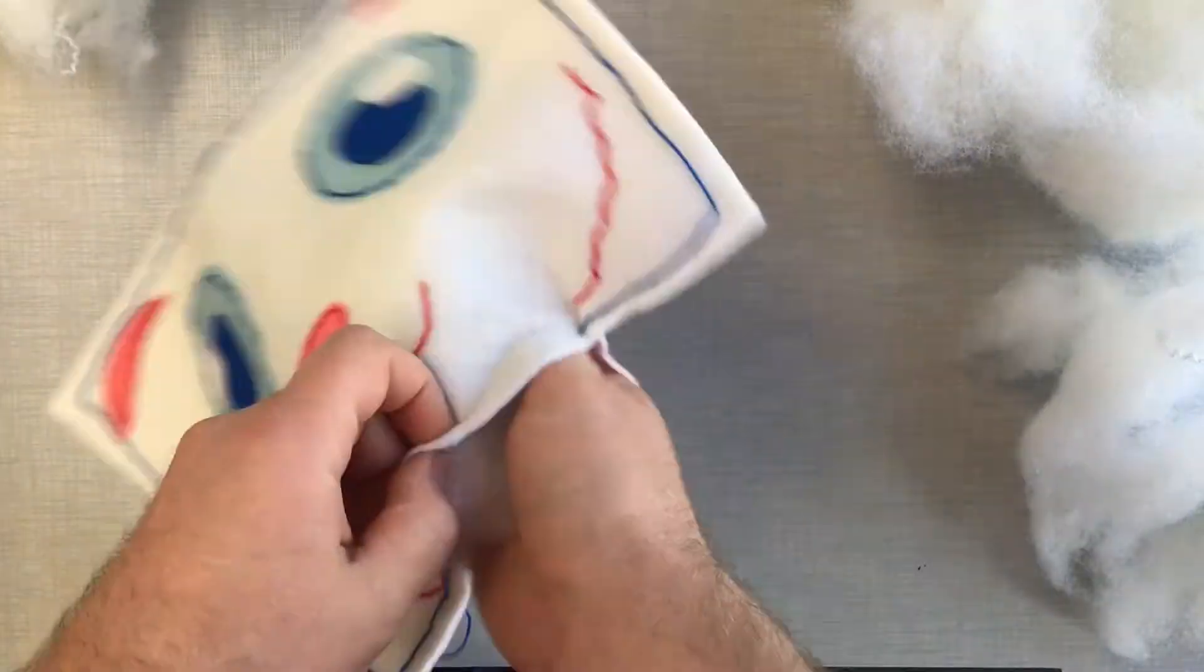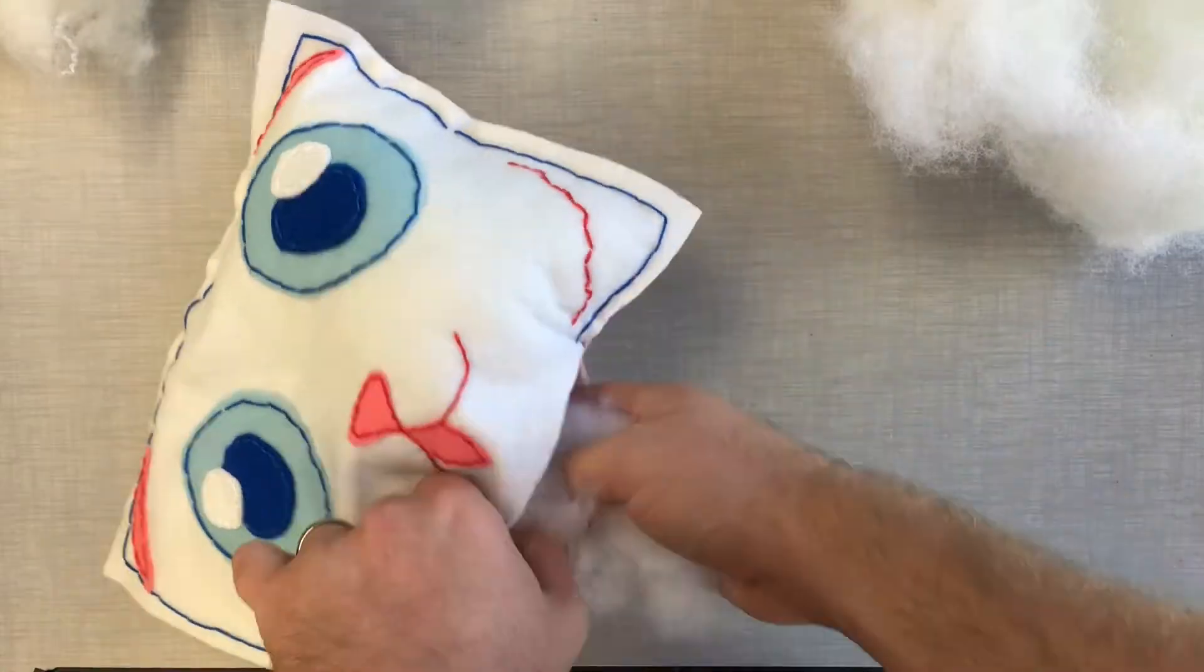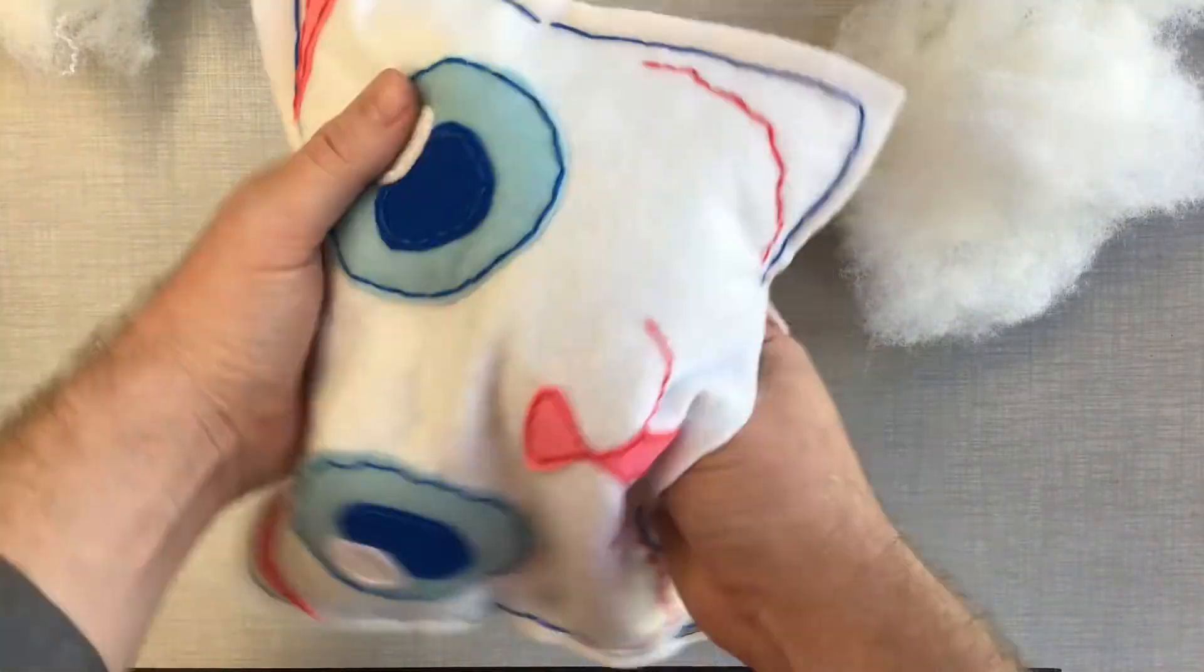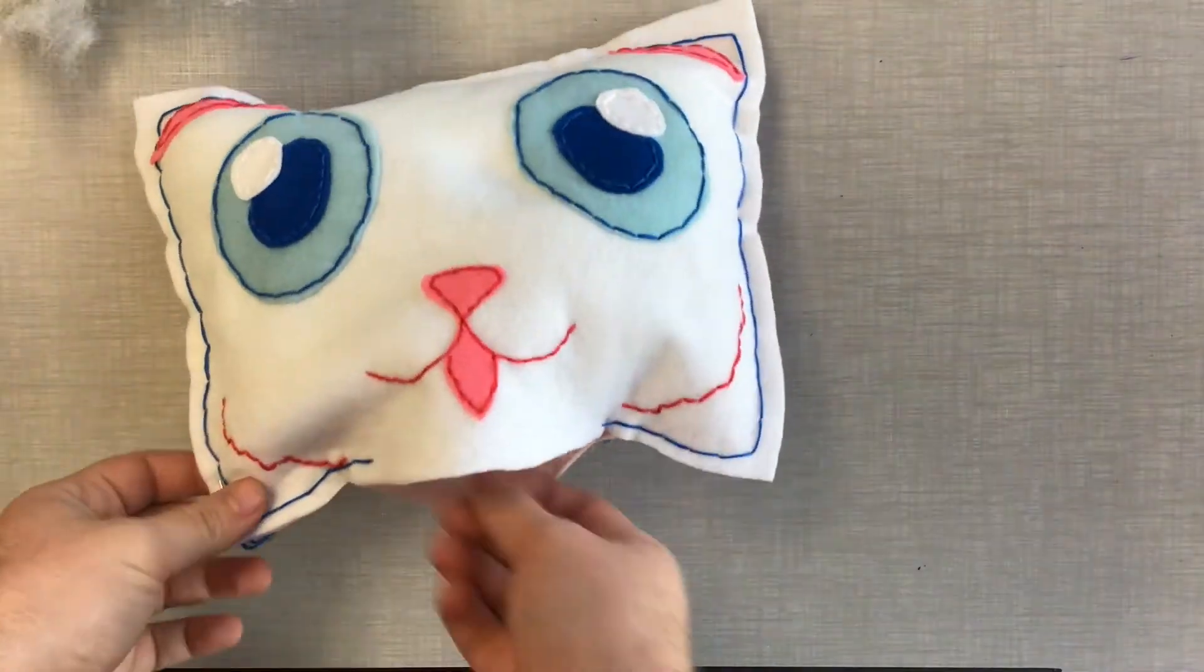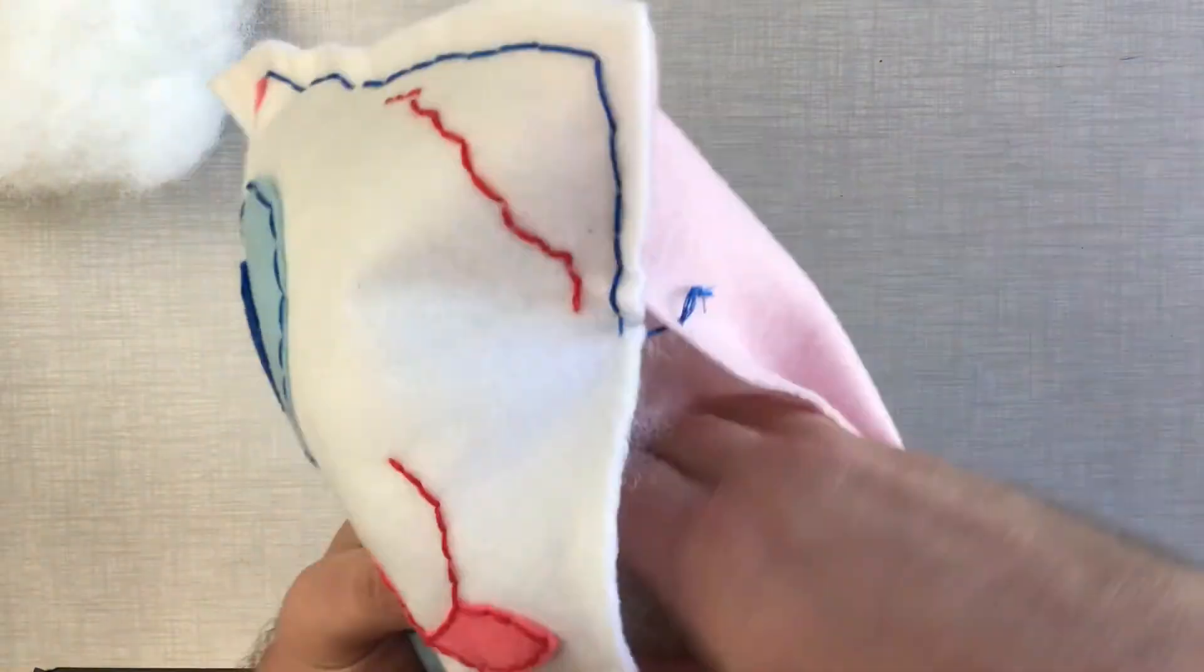Aim towards the corners first because it's easier to put the stuffing into the corners first. And then just jam that sucker full. You need to stuff it a little bit fuller than you think because whenever you sew the piece down, it's going to kind of deflate a little bit.